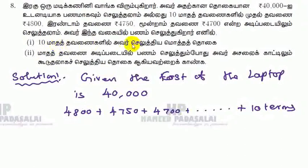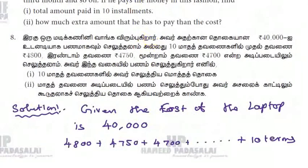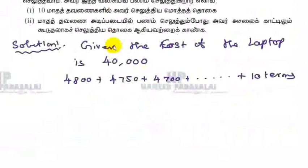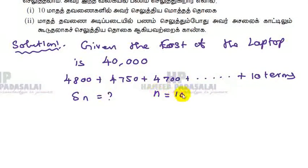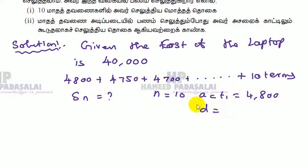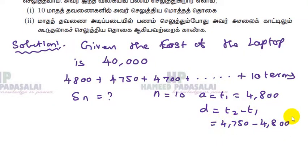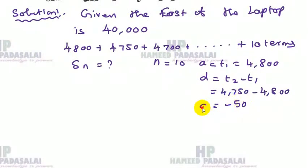First question: total amount paid in 10 installments. We need to find the summation of the total installments, where n equals 10. The first term a is 4,800. The common difference D is the second term minus the first term: 4,750 minus 4,800, which gives minus 50. That is the value of D.